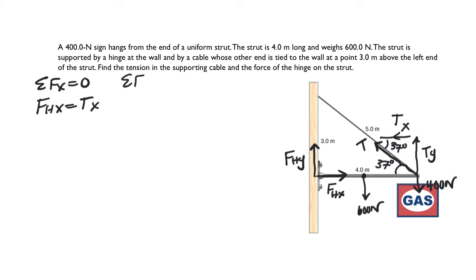Now let's look at sigma FY equals zero, which is going to tell us that all the up forces equal all the down forces. So TY plus FHY, those are the two upwards forces, equals the two downwards forces, which are 600 newtons and 400 newtons or 1000 newtons. That's what we get from balancing the weights with the upward forces. Again, we can't solve it.